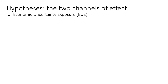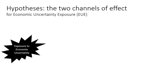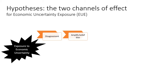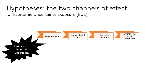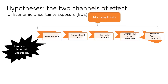We hypothesize that economic uncertainty exposure has two effects. First, economic uncertainty exposure induces disagreement among investors, which amplifies investors' belief bias. Short-sale constraints will make overpricing more likely than underpricing. On average, this will lead to a negative expected return for stocks which have a higher exposure to economic uncertainty. We call this the mispricing effect.